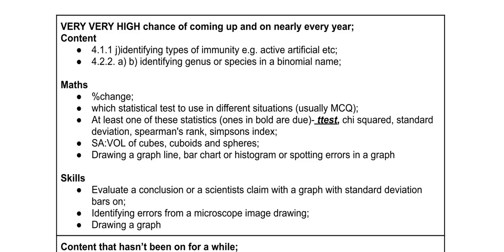You will always get at least one statistic on the paper each year, and the one that hasn't been on for a while is the t-test — it could be paired or unpaired, with unpaired being more common. Some academic years they give you two statistics in one year, so you can't afford to rule the others out even though the t-test is due this year.